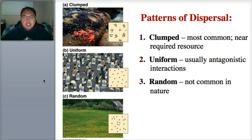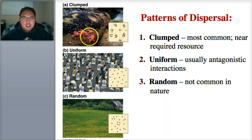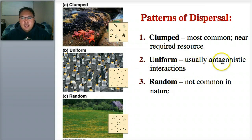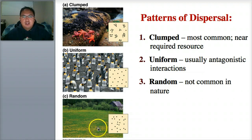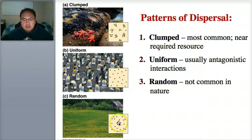Here are the three different patterns of dispersion. The first is clumped — the most common — where individuals are clumped by some sort of resource they want, like sea stars in a tide pool. There's also uniform, where individuals are equally spaced, usually due to antagonistic interactions between species that can't be close to each other — like penguins. And the last is random, which is not very common. There's usually a reason for spacing, but for example, flowers or grass may show no real pattern.